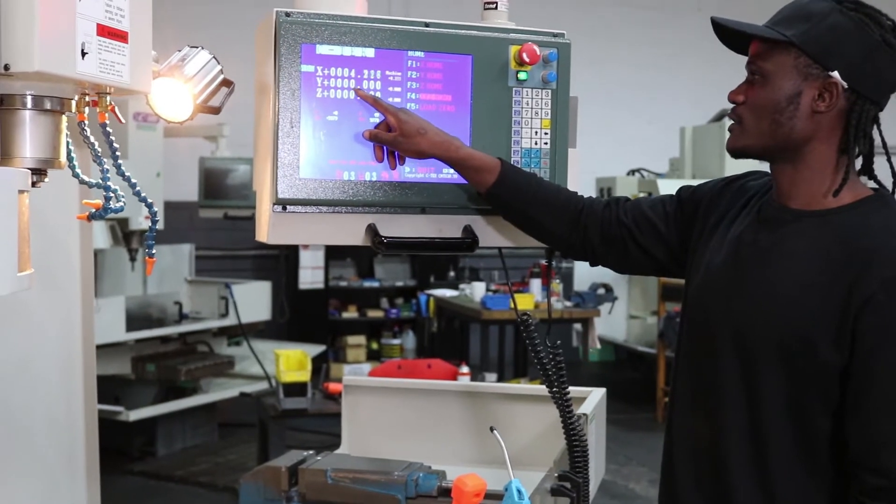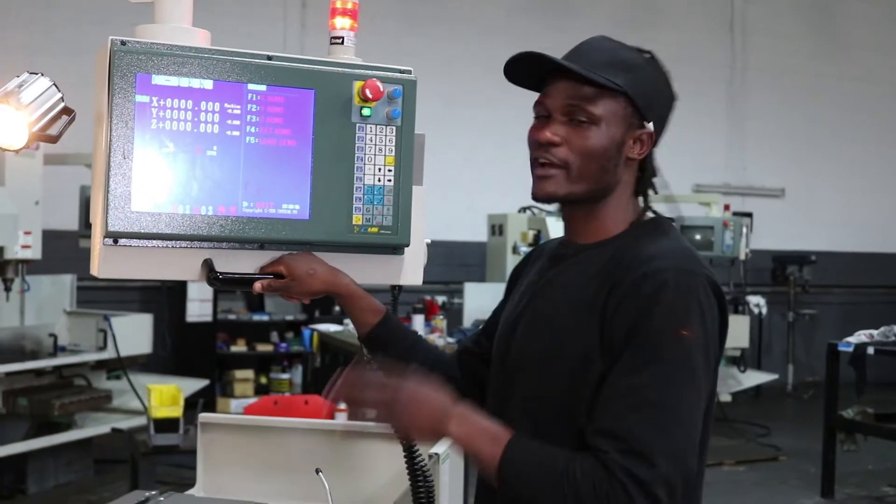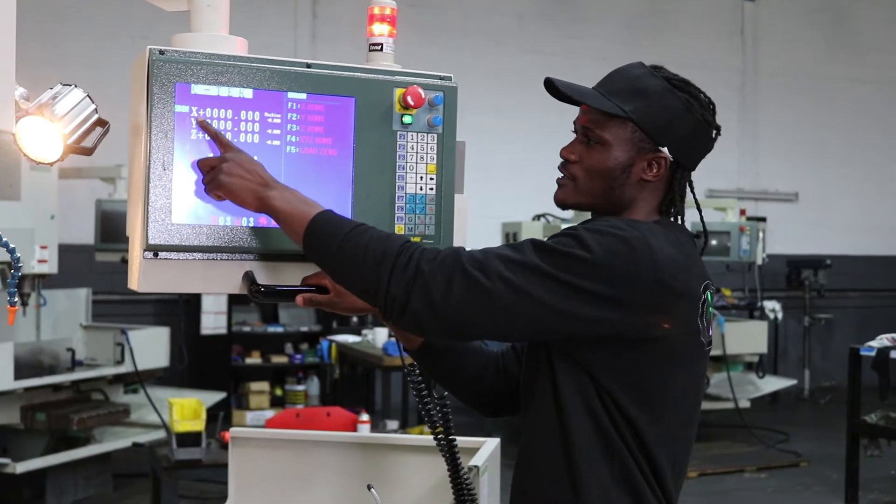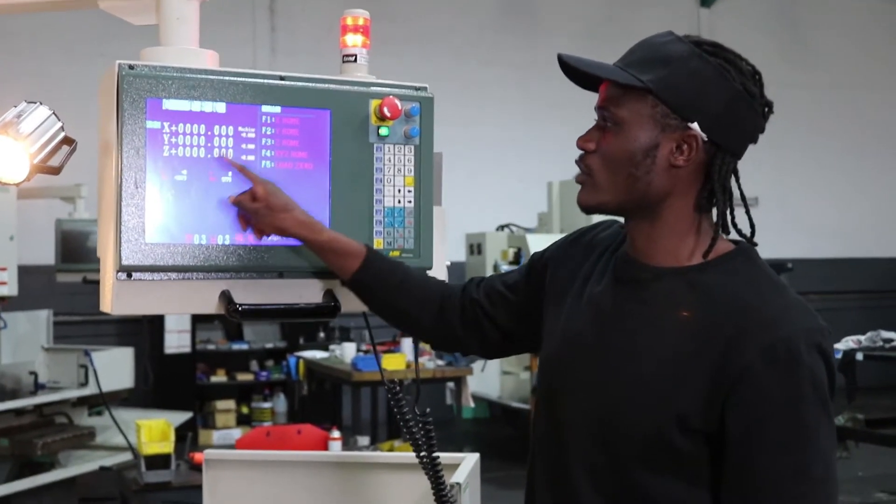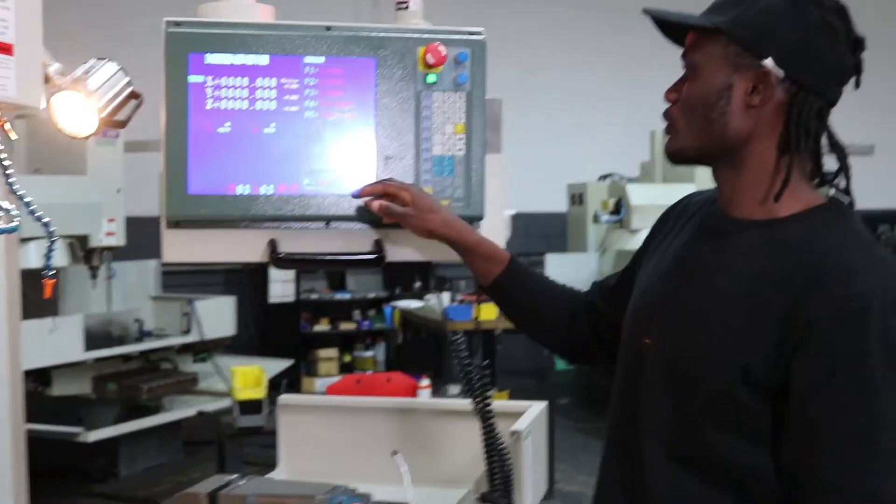XYZ all the movements are happening and you can see it's done on Z, Y still on X. Everything is warmed and when everything is on it goes back to zero the origin. You can see X zero, Y is zero and Z is zero.